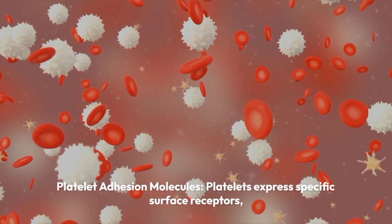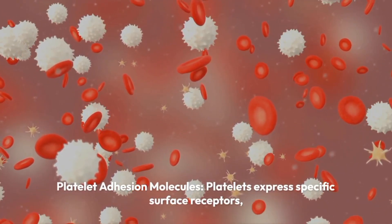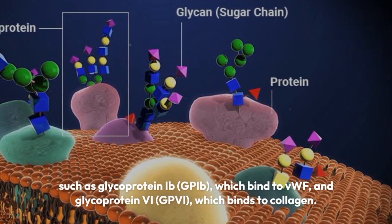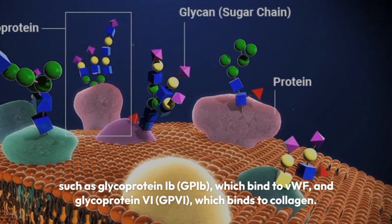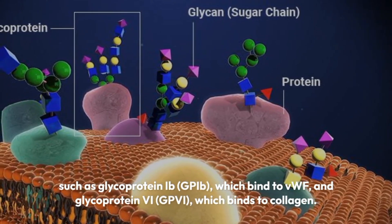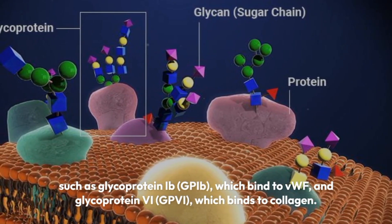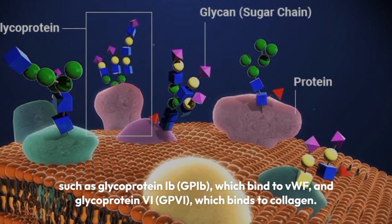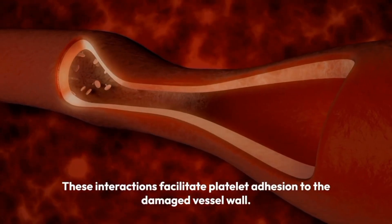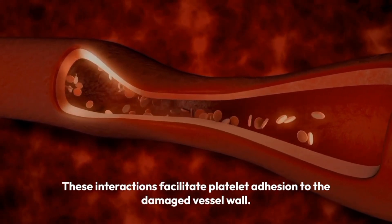Platelet adhesion molecules: Platelets express specific surface receptors, such as glycoprotein IB (GPIB), which binds to VWF, and glycoprotein VI (GPVI), which binds to collagen. These interactions facilitate platelet adhesion to the damaged vessel wall.